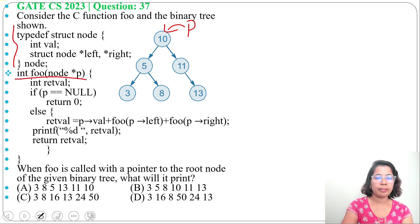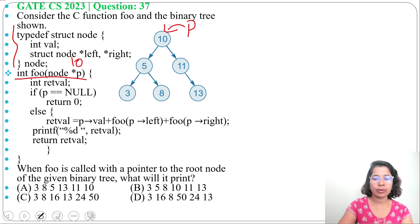The function foo takes a node pointer p, initially pointing to the root node 10. It declares a return value variable (retval). If p equals null, return 0. Otherwise, retval equals p->value plus foo(p->left) plus foo(p->right). Then it prints and returns the return value.